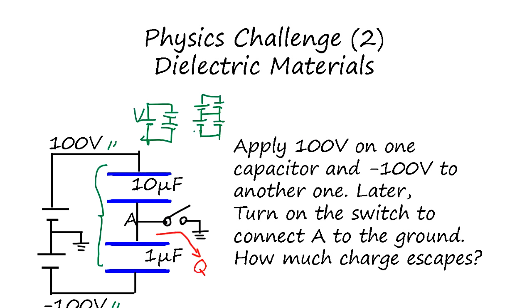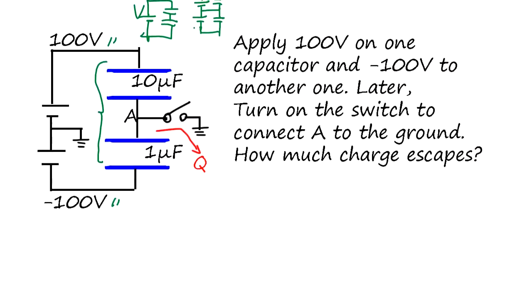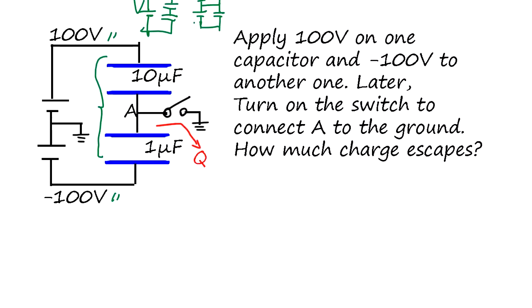We find out how much charge escapes. In series capacitance from the previous video, the total capacitance C, where 1 over C equals 1 over C1 plus 1 over C2, so C equals C1 times C2 divided by C1 plus C2.